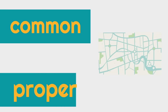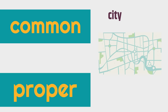Now, this is our final one. The common noun of this — this is a map of a city. City would be the common noun, and notice the lowercase letter. It's the type of person, place, or thing. Now, let's say this city is Denver. Denver would be the proper noun, and notice it's an uppercase or capital letter because it's the proper noun. It's the specific thing that it is — it's Denver.